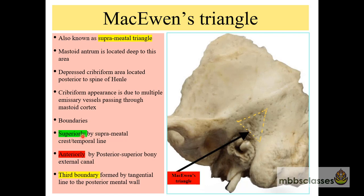Looking at a picture of the temporal bone: this is the tympanic part, this is the mastoid process, this is the zygoma, this is the fossa for the condyles, and this is the suprameatal crest. The first line of McEwen's triangle is formed by the suprameatal crest or temporal line. The second line is formed by the posterior superior bony external canal. The third boundary is formed by the tangential line to the posterior meatal wall. This triangular area is known as McEwen's triangle.